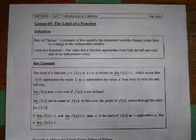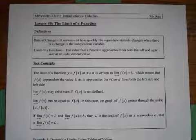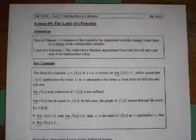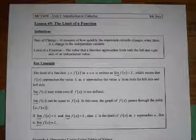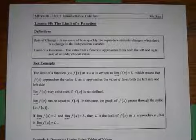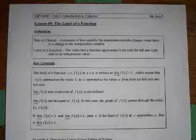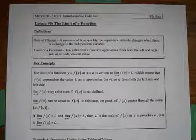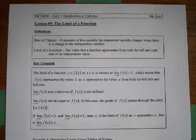So on the screen we've got our lesson: limit of a function. The rate of change is what we did last unit — basically how quickly the dependent variable changes with respect to the independent. We had average rate of change and instantaneous rate of change. Instantaneous was like the slope of the tangent at a point.